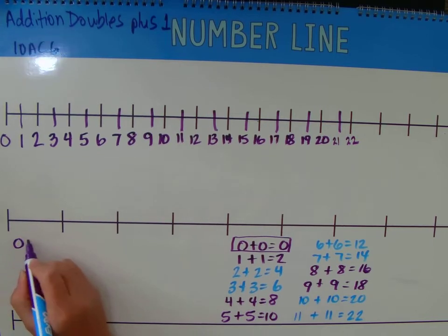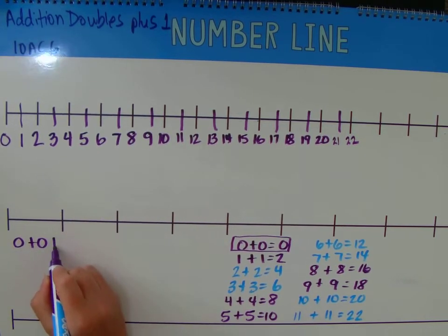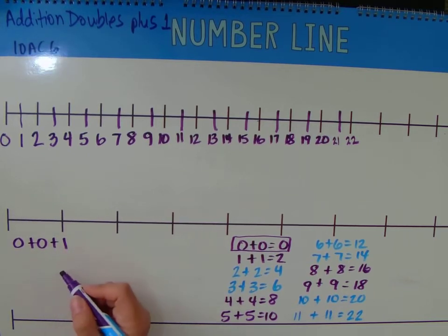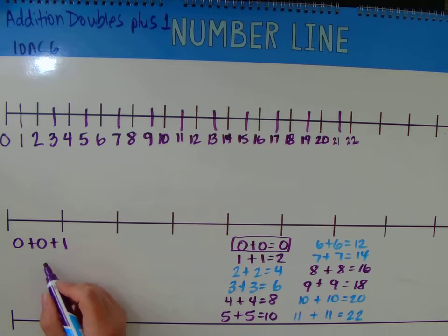So if we have 0 plus 0, and we add one more, we're adding three numbers.